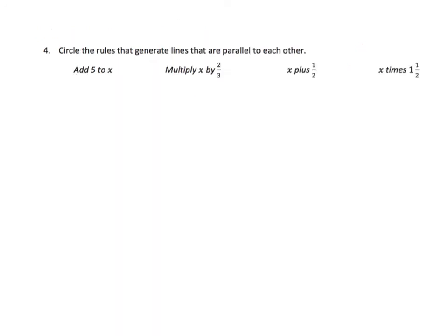For the final part, four, it says, circle the rules that generate lines that are parallel to each other. Well, where were the lines parallel? Well, the lines were parallel when our operations were either addition or subtraction. So, when we multiplied and divided, we ended up with lines that started at the origin, but were not parallel.